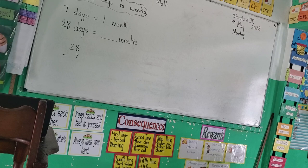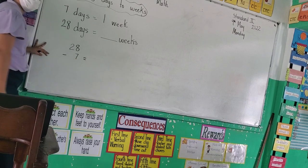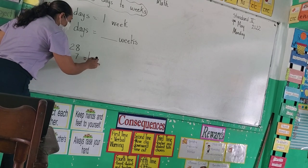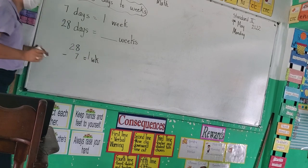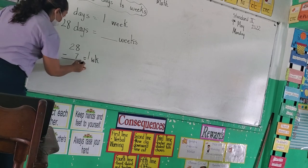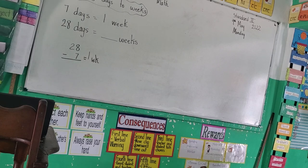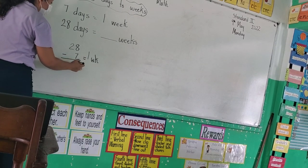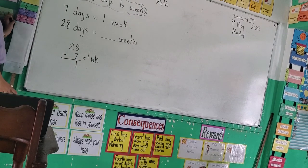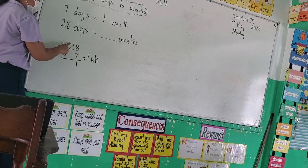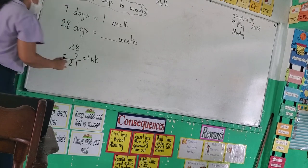Remember, I told you that every time you subtract, you need to write seven equals one week. The short way to write week is WK. So now we subtract. If I have eight, can I take away seven? Yes. I end up with one. But what is missing? The tens column, right? So I say two minus nothing is two.